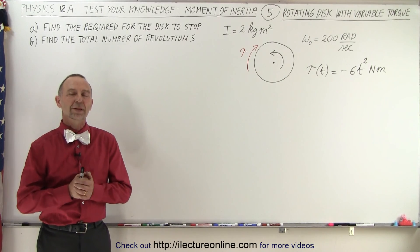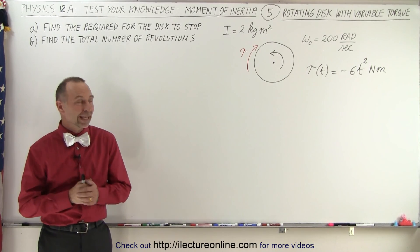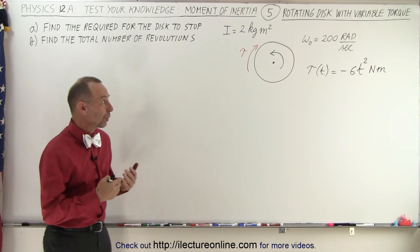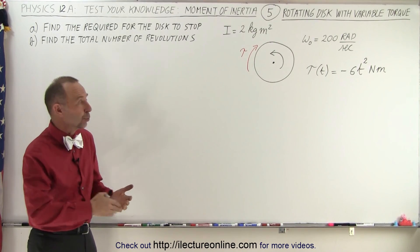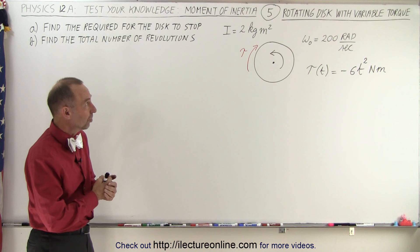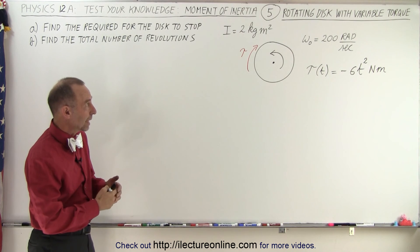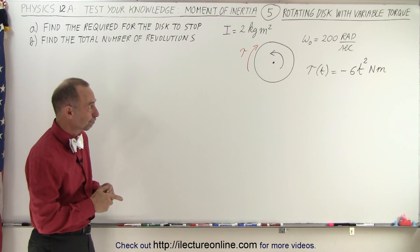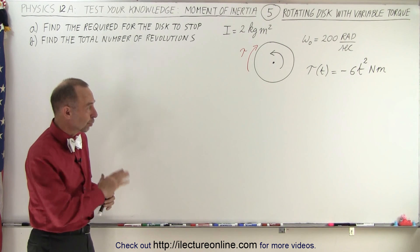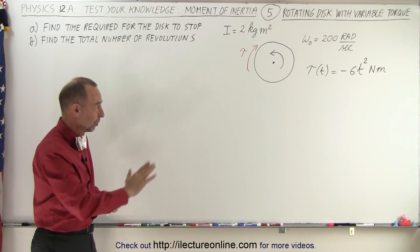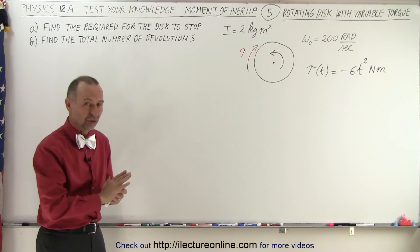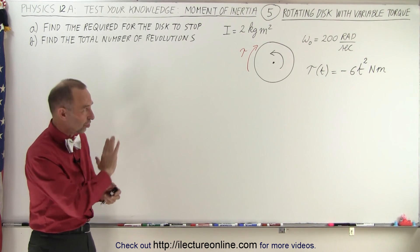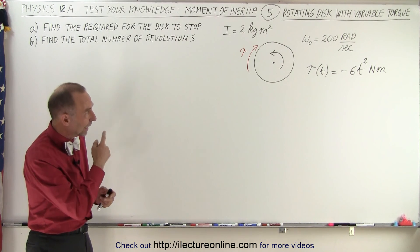Welcome to ElectronLine. In this example we're given a rotating disk that's uniformly distributed — the mass is uniformly distributed — so it's a solid disk.